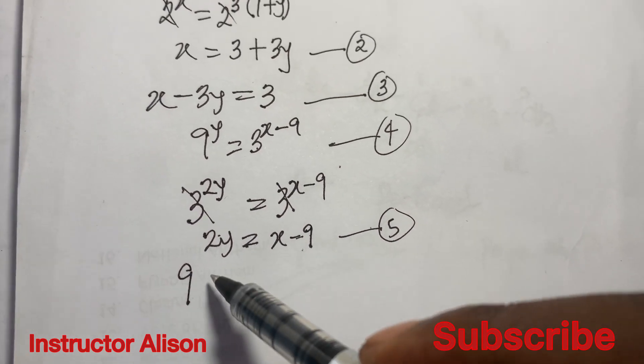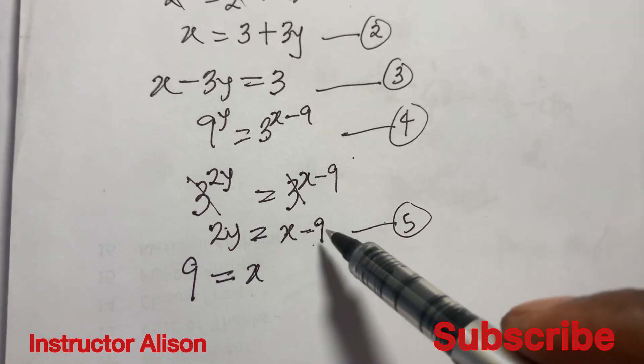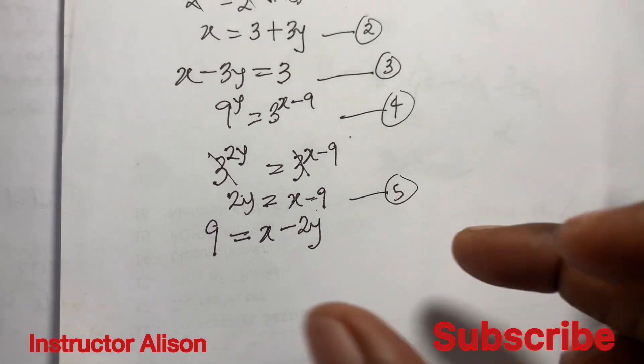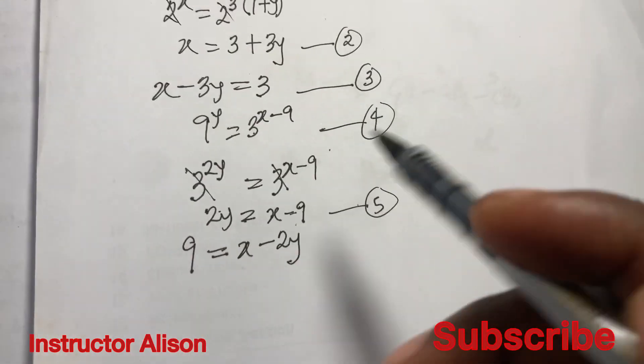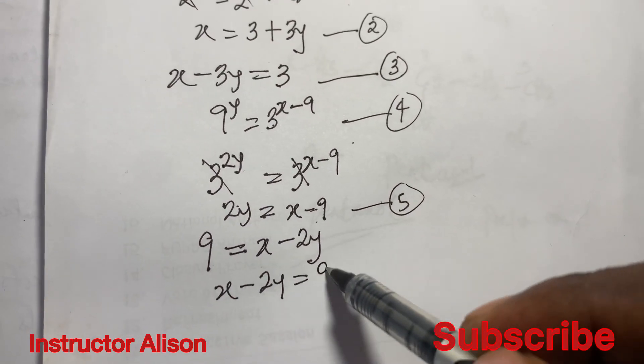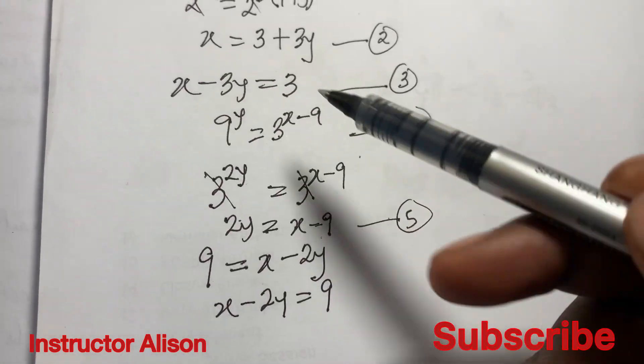If 2y comes to this other part it changes to minus 2y, and if minus 9 moves to this other part it becomes 9. By symmetric function you can turn this problem so that it becomes x minus 2y equal to 9.